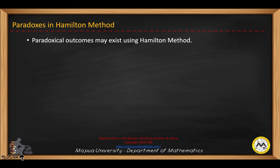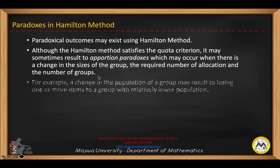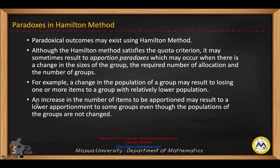Now let's talk about the paradoxes in Hamilton method. Paradoxical outcomes may exist using the Hamilton method. Although it satisfies the quota criterion, it may sometimes result in apportionment paradoxes, which may occur when there is a change in the size of a group, the required number of allocations, or the number of groups. For example, a change in the population of a group may result in losing one or more items to a group with a relatively lower population. Also, an increase in the number of items to be apportioned may result in a lower apportionment to some groups, even though the populations have not changed.